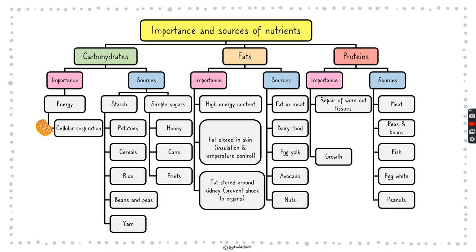For carbohydrate, the main importance is to make energy through cellular respiration. Remember that cellular respiration is not breathing in and out — breathing in and out is inhalation and exhalation, which is just the exchange of gases. The main point of breathing in is to get oxygen gas, which is used in cellular respiration along with glucose from carbohydrate, where you break down glucose in the presence of oxygen to produce energy in the form of ATP, and you get the waste products carbon dioxide and water.